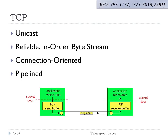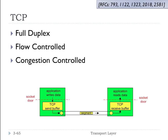Pipelining gives us much better utilization of the network. TCP is also a full duplex protocol, meaning there's bi-directional data flow over the same connection — information can flow from sender to receiver and from receiver to sender. TCP is flow controlled, meaning the sender will limit its sending speed to make sure the receiver is not overwhelmed. Similarly, TCP provides congestion control, where the sender limits its sending speed based on network conditions. If the network is congested, it will slow itself down to allow the network to catch up.